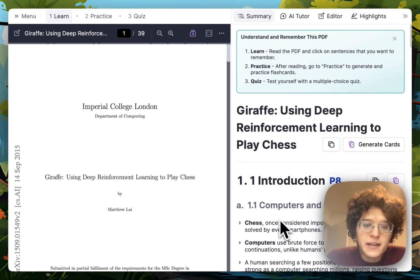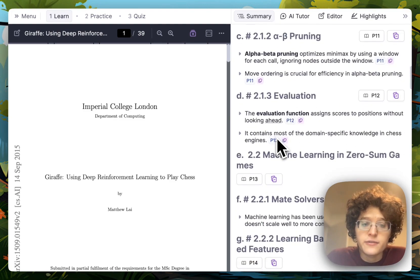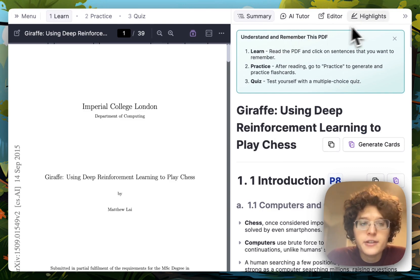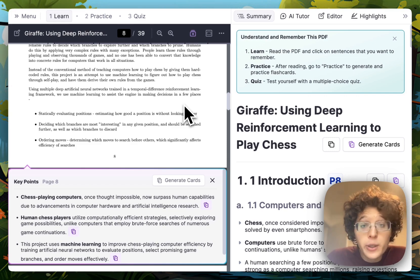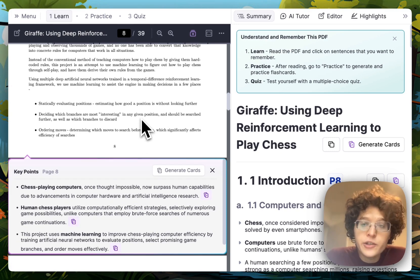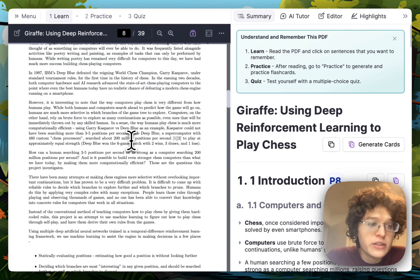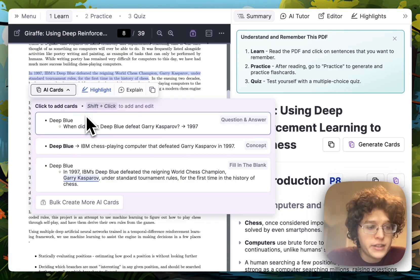We can see for this PDF that I just added, I immediately have a full summary, as well as the same features of my AI tutor, highlights, practice quiz, and more. PDFs also have a new key points feature that summarizes the three most important points at the bottom of every page. As you're reading, you can click on any sentence that you want to remember, and you'll automatically see generated flashcards for that sentence.